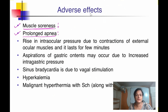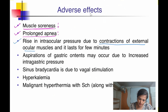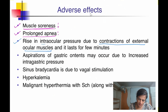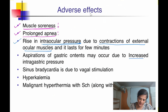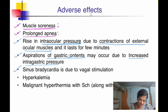Next adverse effects: because of fasciculations there is contraction of the external ocular muscles, leading to a rise in intraocular pressure. There is also increased intragastric pressure, which may cause the person to aspirate gastric contents. Vagal stimulation leads to sinus bradycardia.